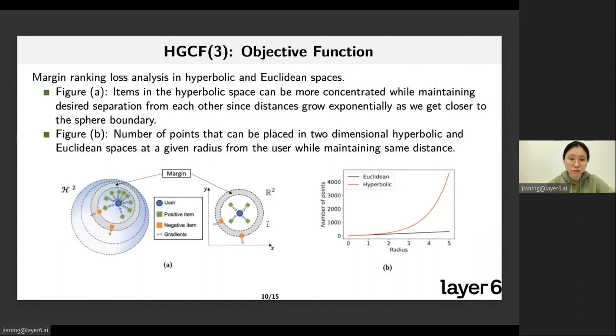Now let's take a closer look at the objective function compared with its Euclidean version. In Figure A, we elaborate the margin ranking loss on hyperbolic space versus Euclidean space. Because the volume on hyperbolic space grows exponentially because of the curvature, it grows exponentially as it gets closer to the boundary. Items on the hyperbolic space can be more concentrated while maintaining a desired separation from each other. The benefit of that is in hyperbolic space, we can squeeze in more points at the same radius compared to Euclidean space.